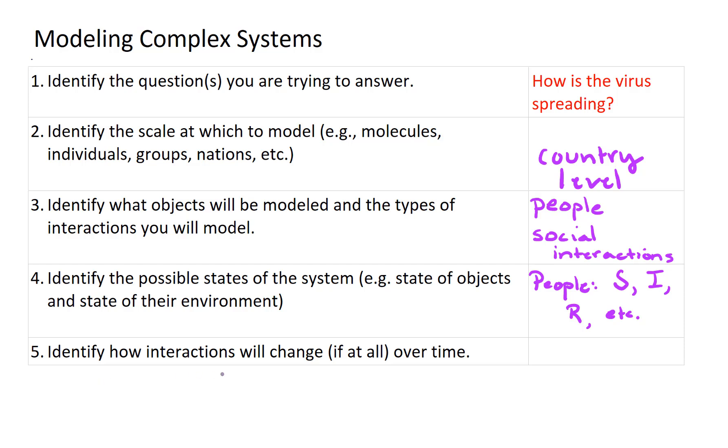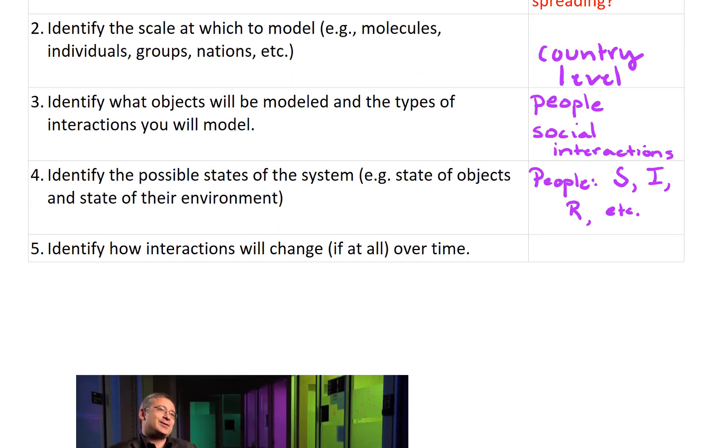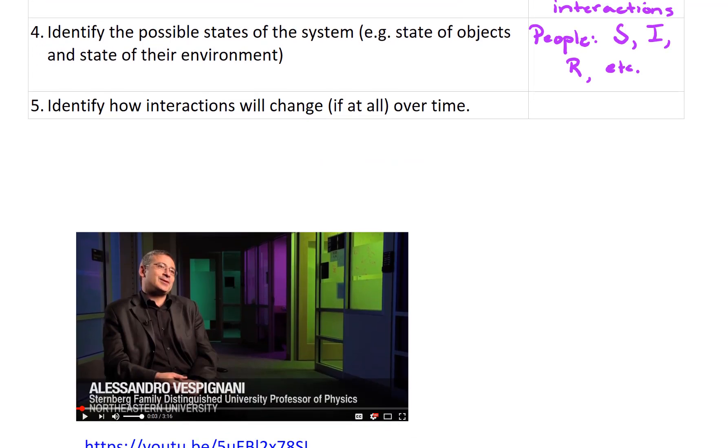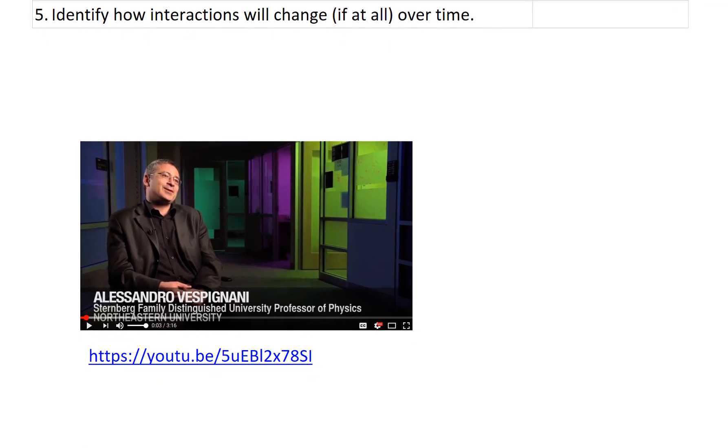And then identify how interactions will change, if at all, over time. And so this is something that we would also have to consider. Maybe sick people stay at home, maybe people travel from country to country. Now there have actually been researchers who've studied the spread of diseases along airline routes and other sorts of things.